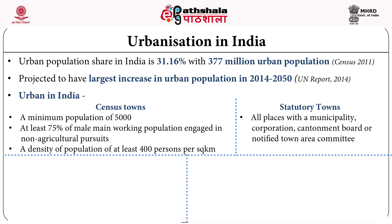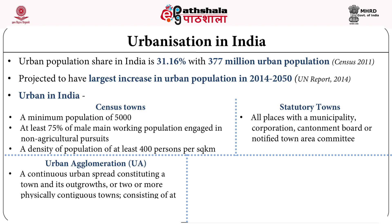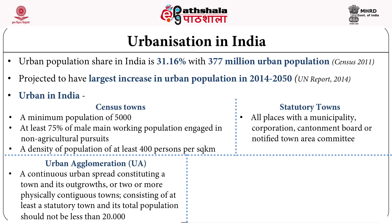Urban agglomeration is basically when contiguous urban areas are present. Urban agglomeration is defined as a contiguous or continuous urban spread, constituting of a town and its outgrowths, or two or more physically contiguous towns consisting of at least a statutory town, and its total population should not be less than 20,000.